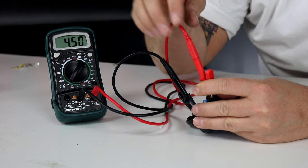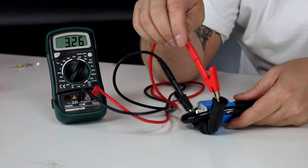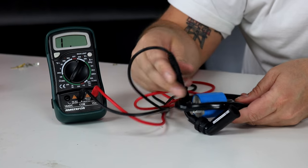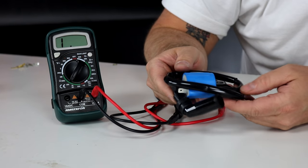So for a simple single spark plug ignition coil like this, that's how you measure the primary and the secondary, and that tells us that the coil is in spec and should be working fine.